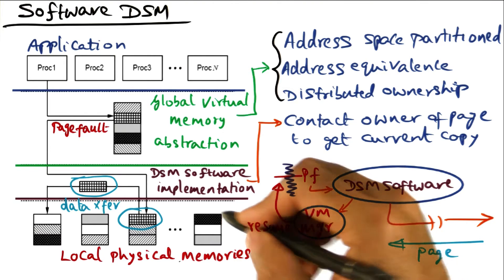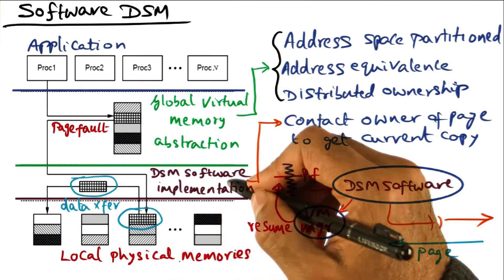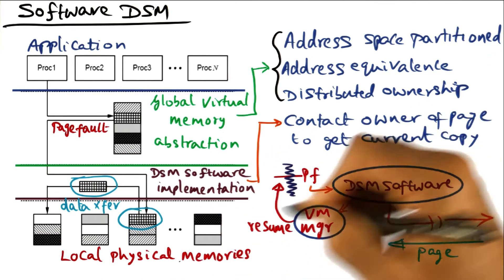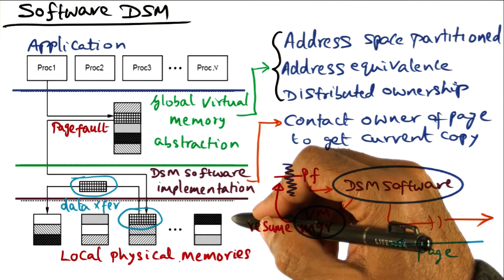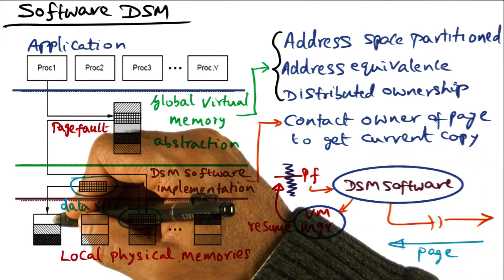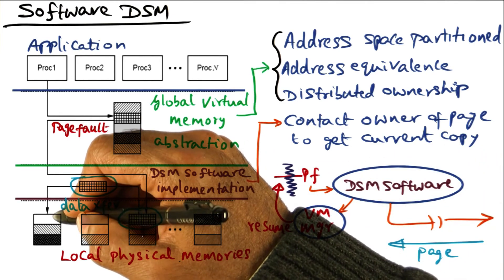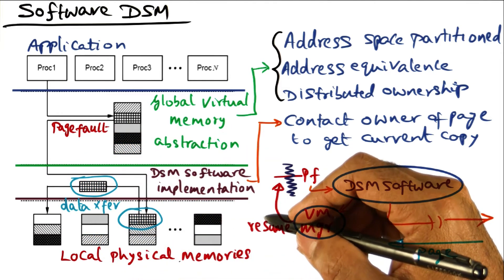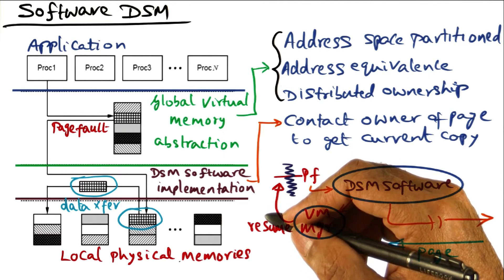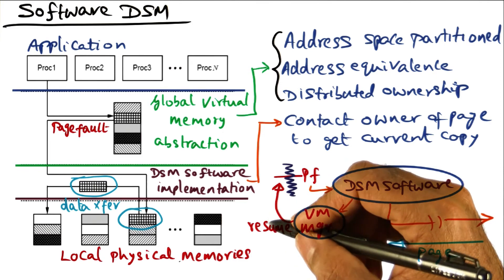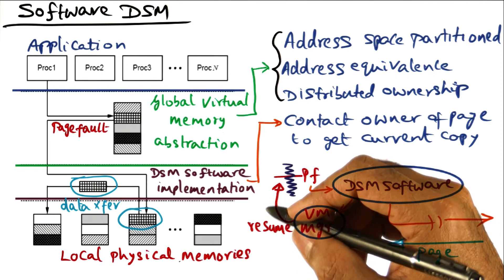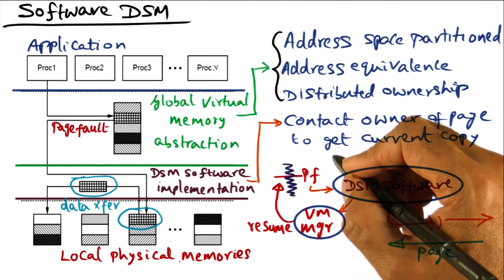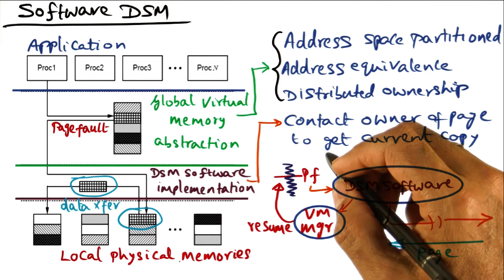This protocol is easy to implement. At the point of a write to a page, you go through the DSM software, contact the owner, and the owner says: I know who all have copies of the page, I'll invalidate all of them. Once it has invalidated all the copies, the processor that wants to write to that page can go ahead and write to it, because that'll be the only copy. Now, the problem with the single writer protocol is the potential for what is called false sharing — data appears to be shared even though programmatically it is not.